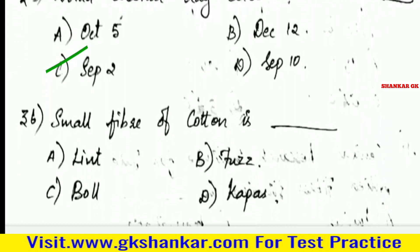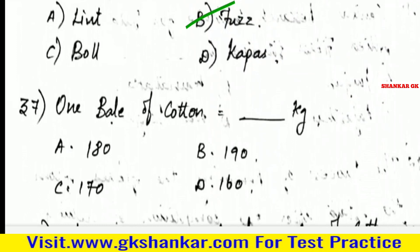Thirty-sixth question: Small fiber of cotton is called — A. Lint, B. Fuzz, C. Boll, D. Kappas. Answer: B. Fuzz.